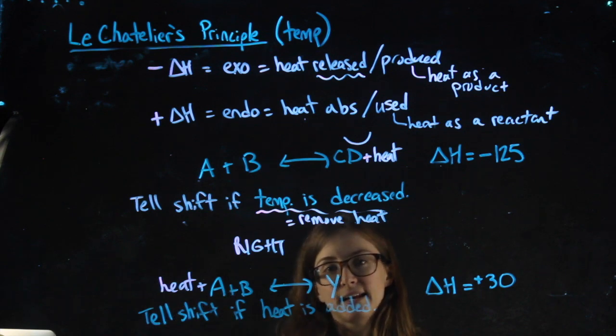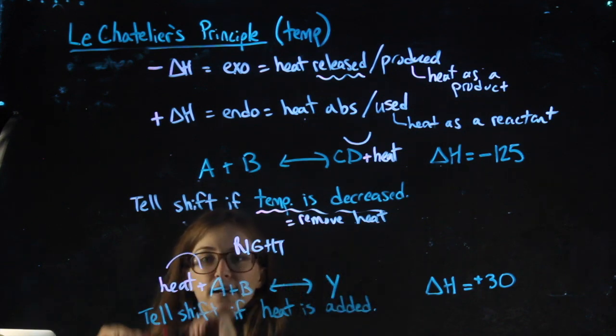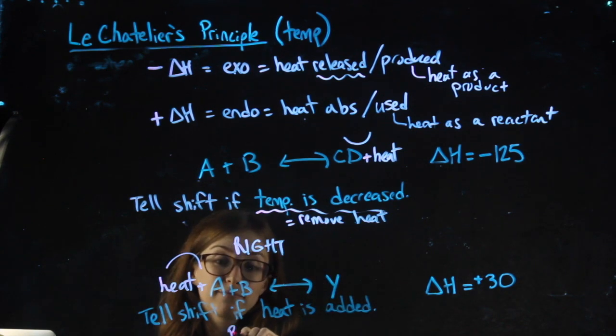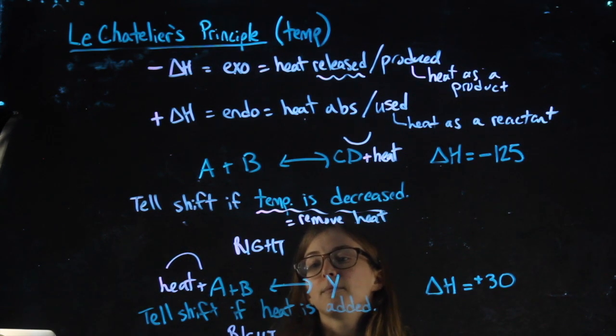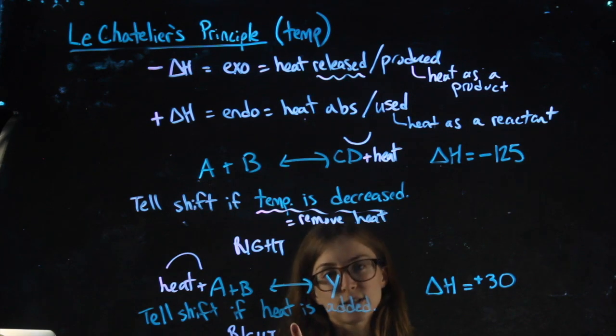Now, if I add heat, that's like a hill on this side. I would shift right to flatten it out. Heat is added. Container is heated. Temperature is increased. All the same way of saying that I added more heat.